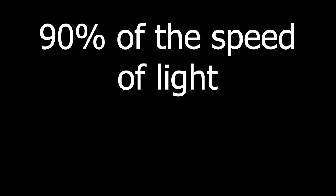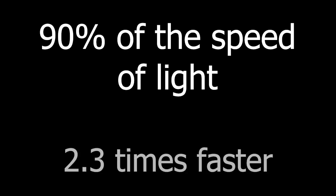In reality, if we managed to build a machine or a ship that went 90% of the speed of light, we would only go 2.3 times faster than the normal time on Earth. In other words, even going at these extreme speeds, we would only be able to go twice as fast as time passes on Earth.